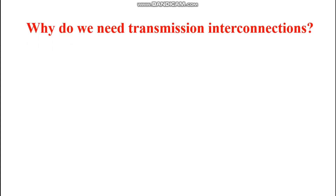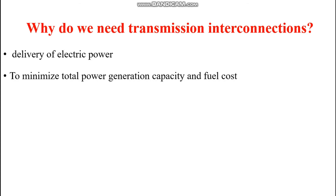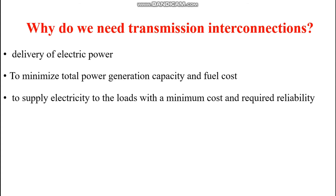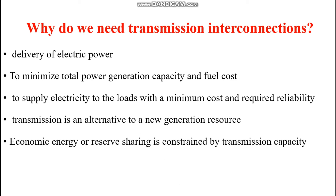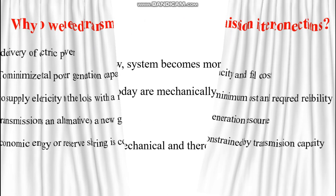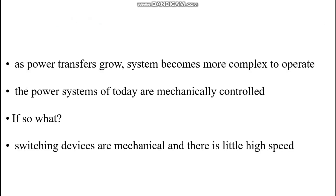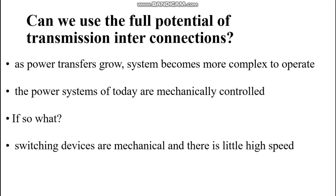Why do we need transmission interconnection? First, for delivery of electric power from generating station to the load center. Second, to minimize the total power generation capacity and fuel cost — including transportation and transmission system maintenance. Third, to supply electricity to loads at minimum cost with required high reliability. The cost of electric energy should be affordable to every common person. Economic energy and reserve sharing is enabled by transmission capacity.